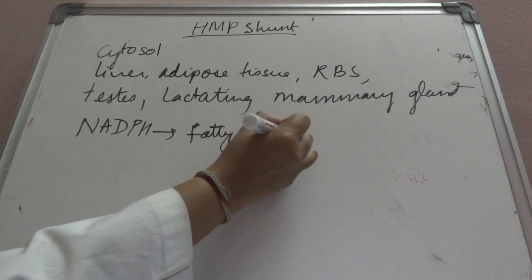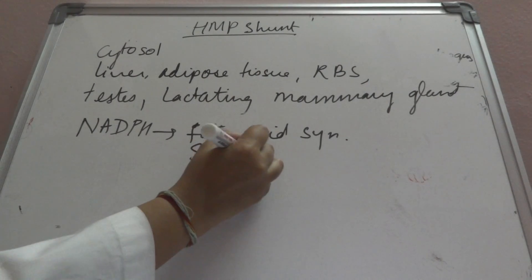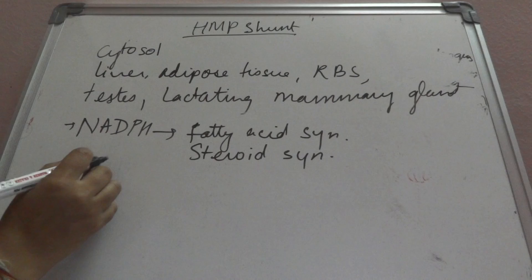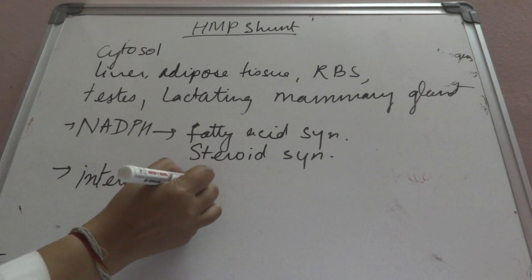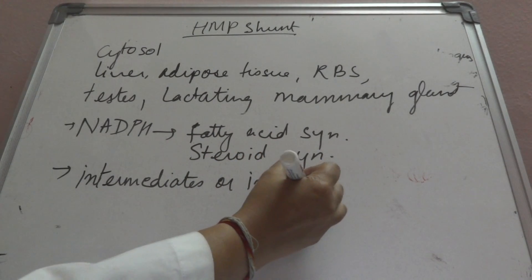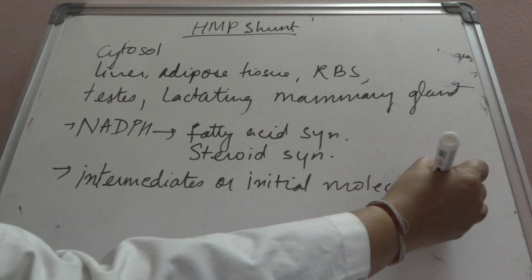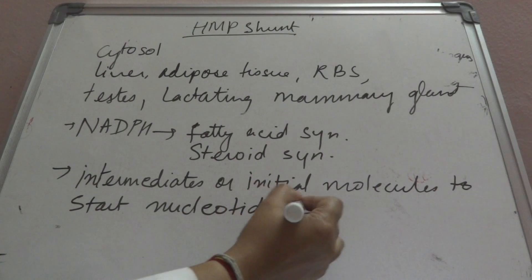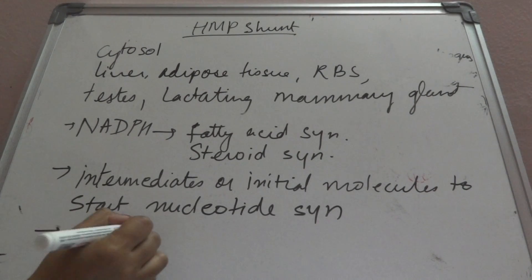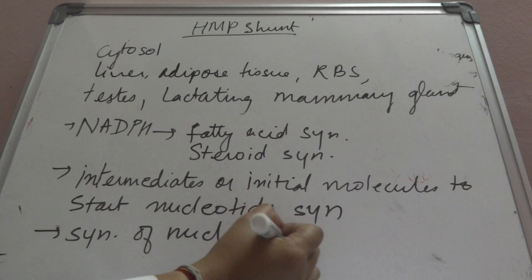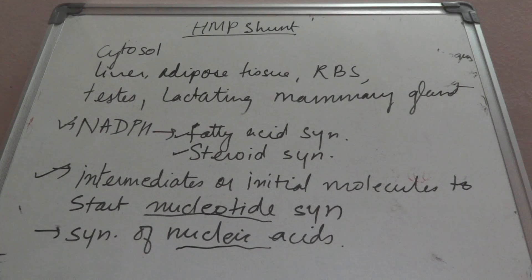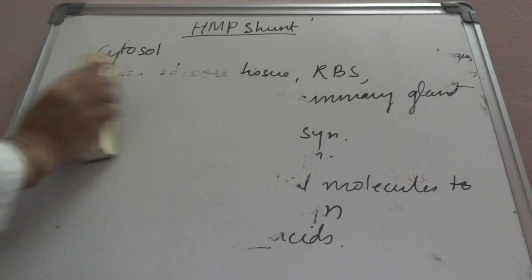NADPH is important in fatty acid synthesis and steroid synthesis. It also forms pentose molecules which are the intermediate or initial molecules to start nucleotide synthesis, and also helps in the synthesis of nucleic acids. So HMP shunt provides NADPH helpful in fatty acid synthesis, steroid synthesis, formation of nucleotides and nucleic acids. It takes place in the cytosol of the liver, adipose tissue, and RBC.